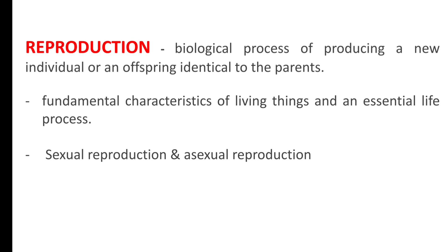Life has a characteristic feature of reproduction. Mainly, there are two types of reproduction: sexual reproduction and asexual reproduction. Asexual reproduction occurs mainly in lower organisms, where male and female individuals use different asexual reproduction methods to develop.